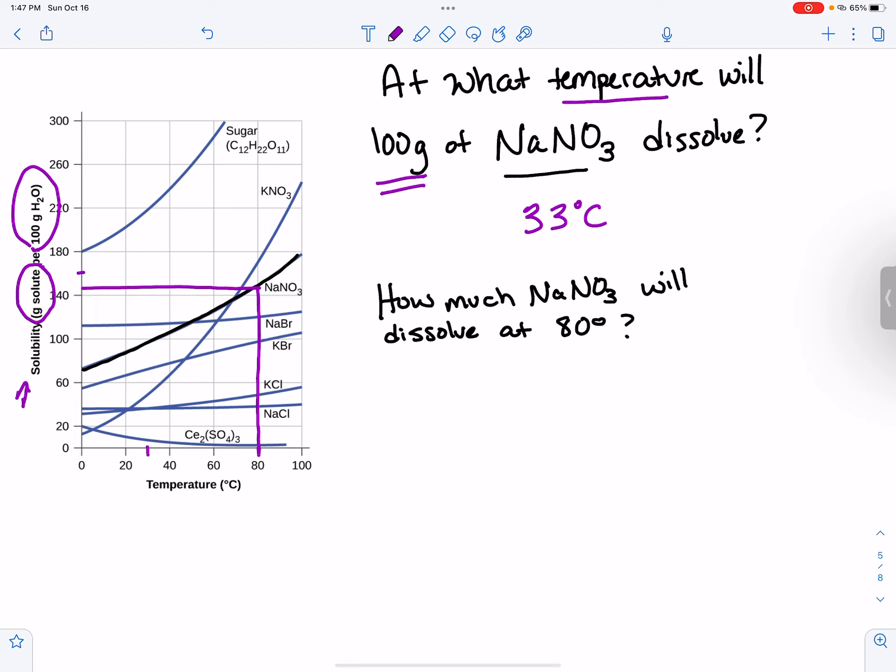And like right here, this would be 160. So it's between 140 and 160. And you know, I kind of feel like right here would be 150. So maybe the answer would be like maybe 148 or something like that. And that answer is grams in 100 grams of water.